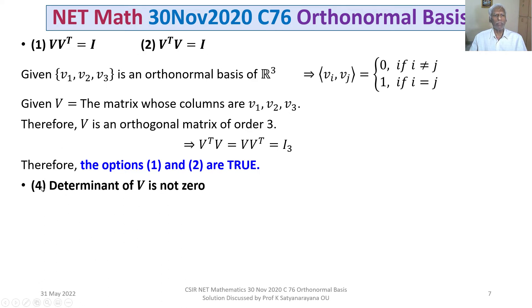Let us look at option 4. The determinant of V is not zero. Now VᵀV = I₃, so det(VᵀV) = det(I₃). This implies det(Vᵀ)·det(V) = 1, which gives (det V)² = 1.